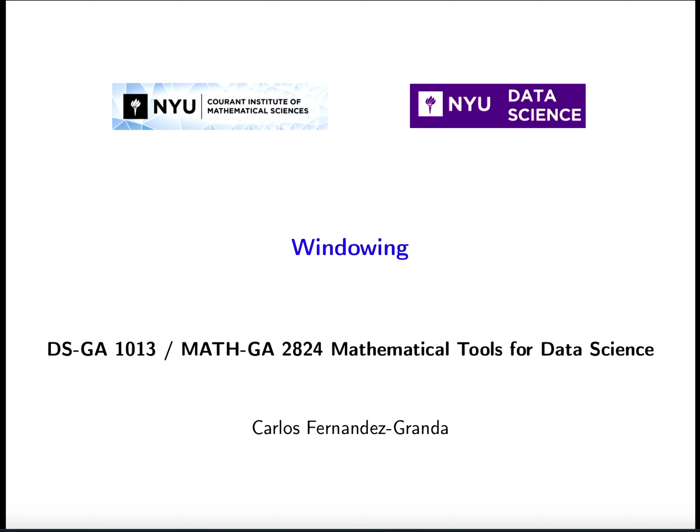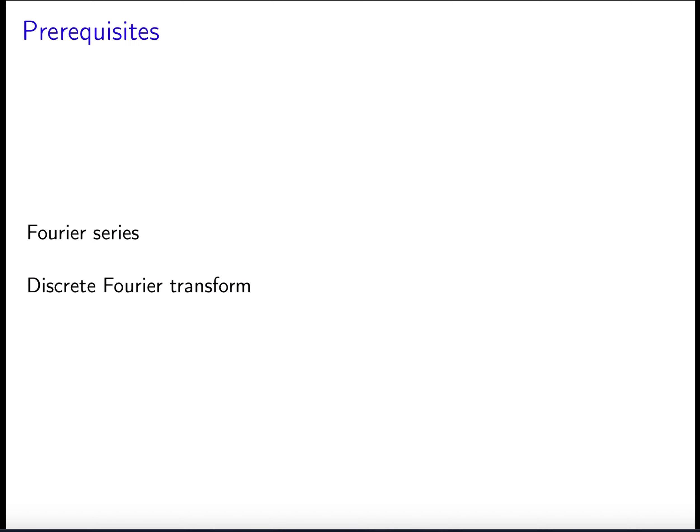Hello everyone, today we're going to talk about windowing. The prerequisites for this material are Fourier series and the discrete Fourier transform.